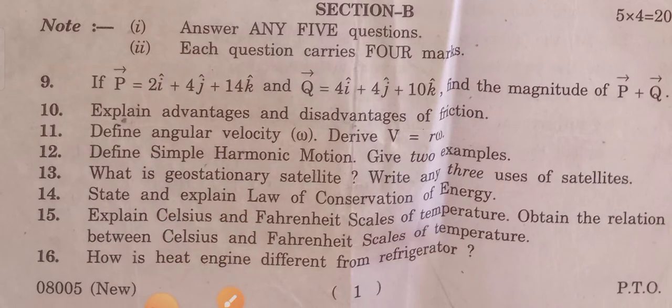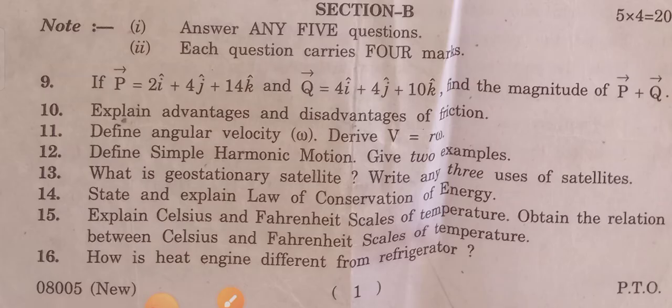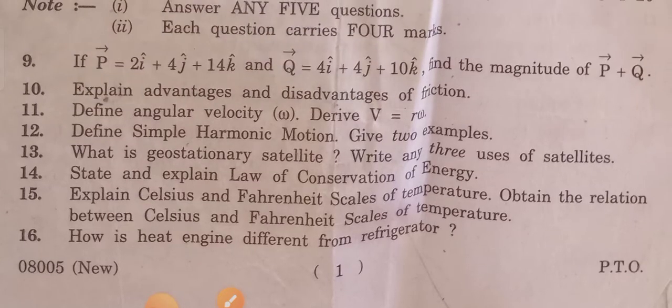Next is Section B questions. Answer any five questions. Each question carries four marks. Explain advantages and disadvantages of friction. Define angular velocity. Recall the different types of simple harmonic motion with examples. What is a geostationary satellite? Write any three uses of a satellite. State and explain the law of conservation of energy. Explain Celsius and Fahrenheit scales of temperature and derive the relation between them. How is a heat engine different from a refrigerator?